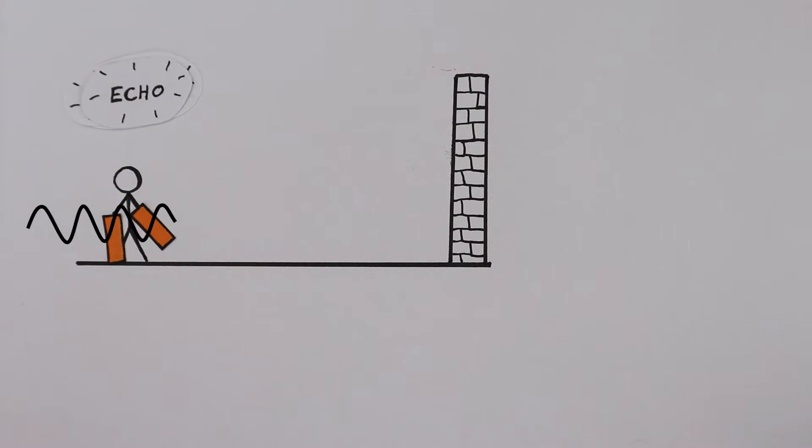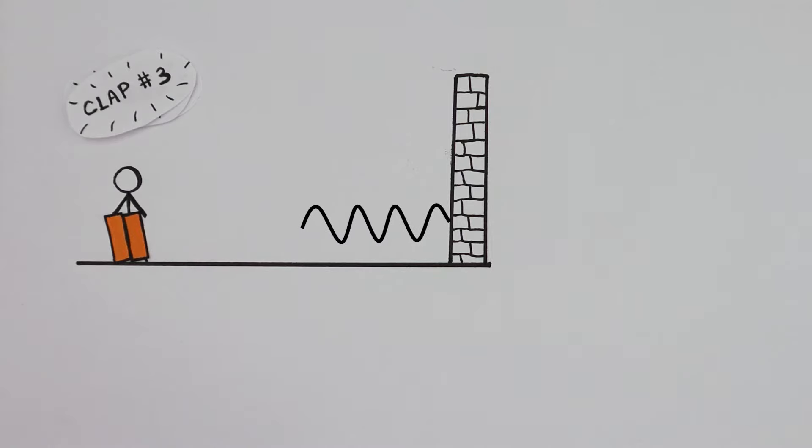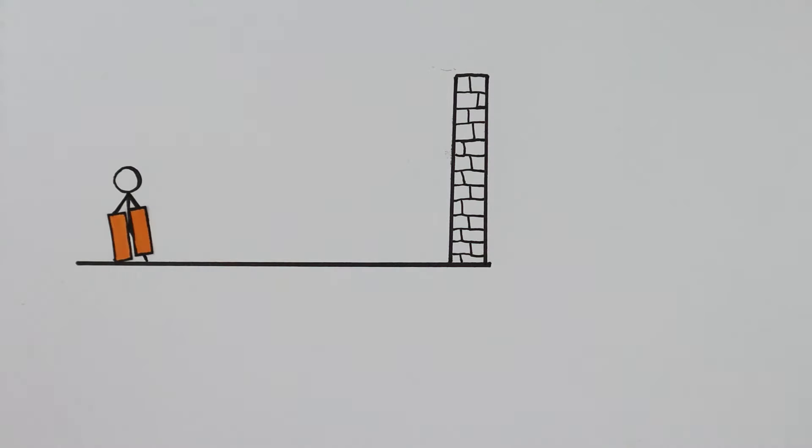After the second echo, he claps a third time. And so on. It'll probably take him a bit of time to get into the right rhythm for synchronization. Once he gets going, we will time 10 claps.